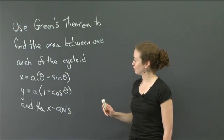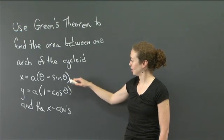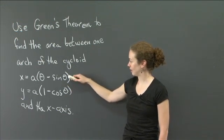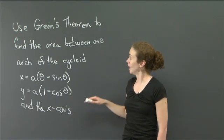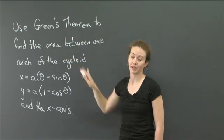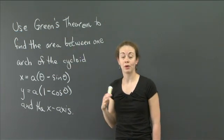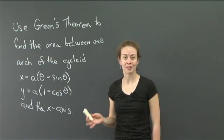It's helpful to draw a picture first. You have one arch of the cycloid defined in terms of θ, with x(θ) and y(θ), and the x-axis as the other bound. The key thing is you're going to use Green's theorem to find the area. Pause the video and work on the problem. When you're ready to see my solution, bring the video back up.